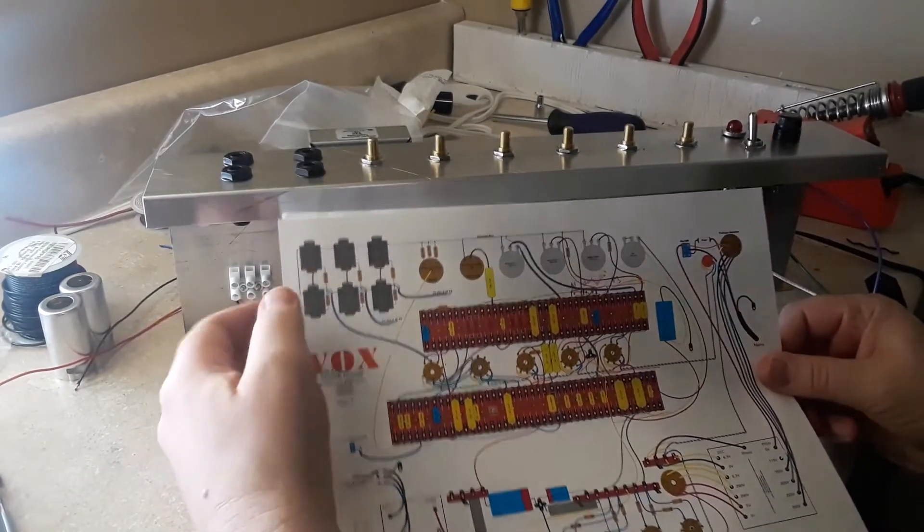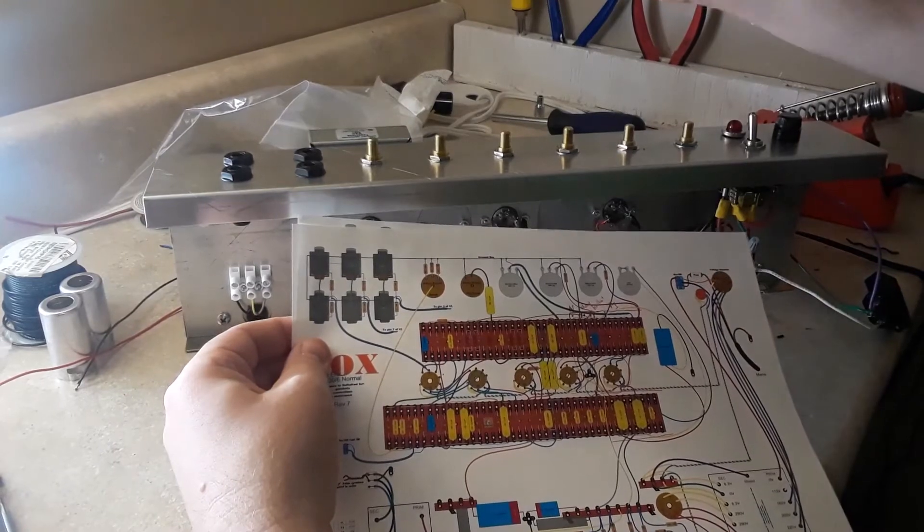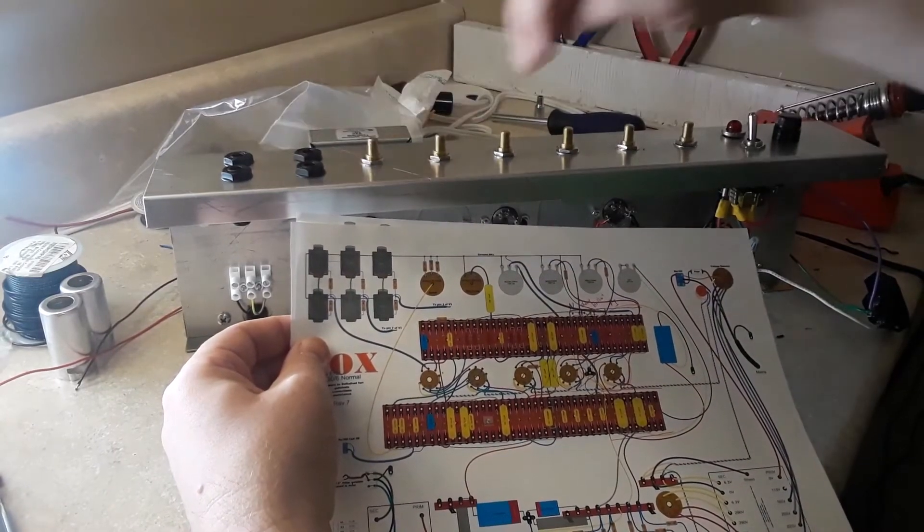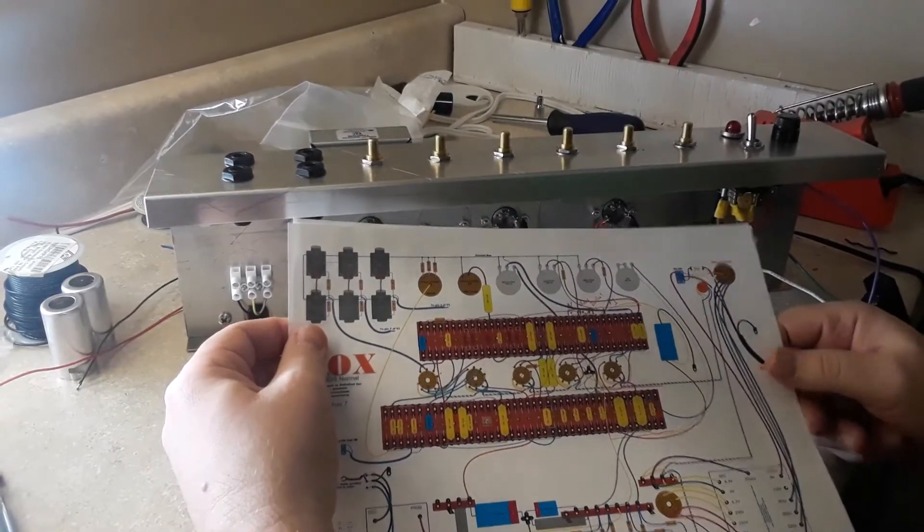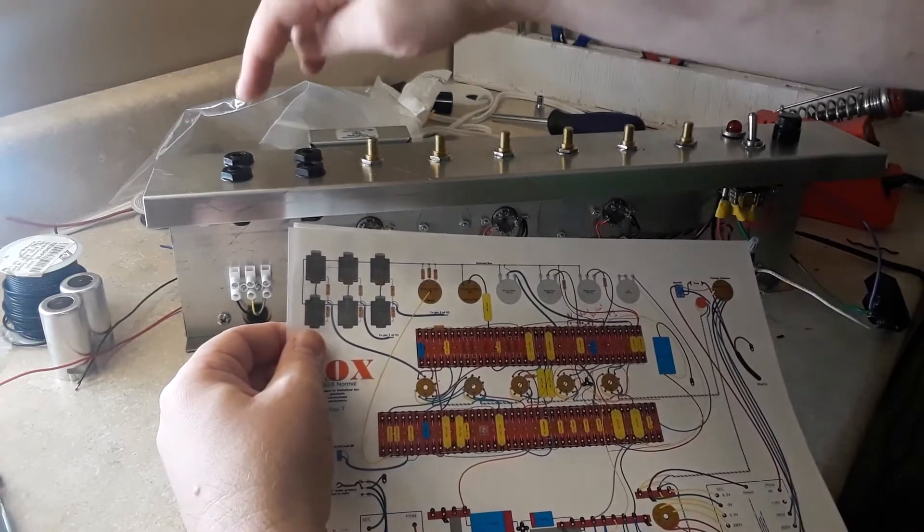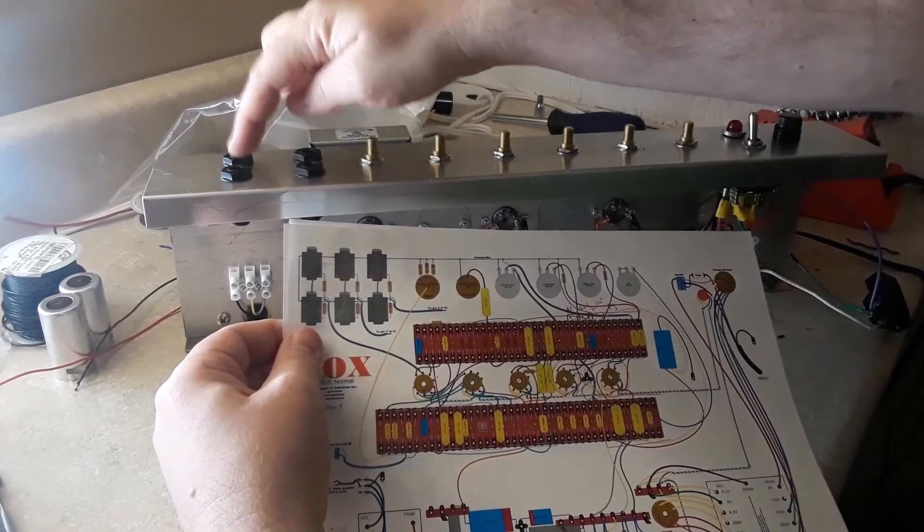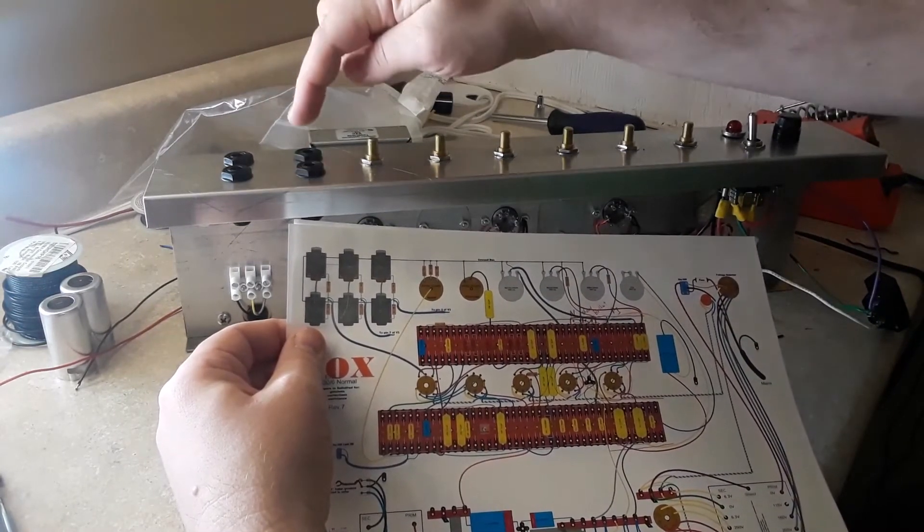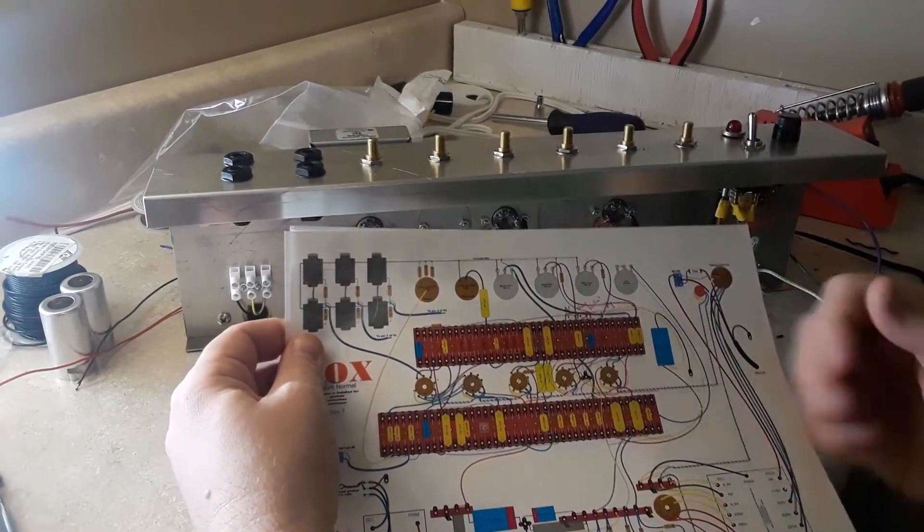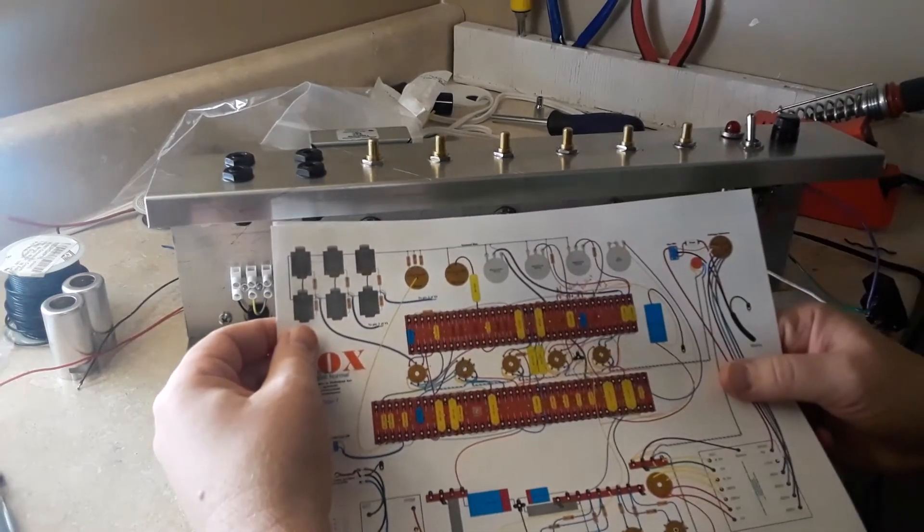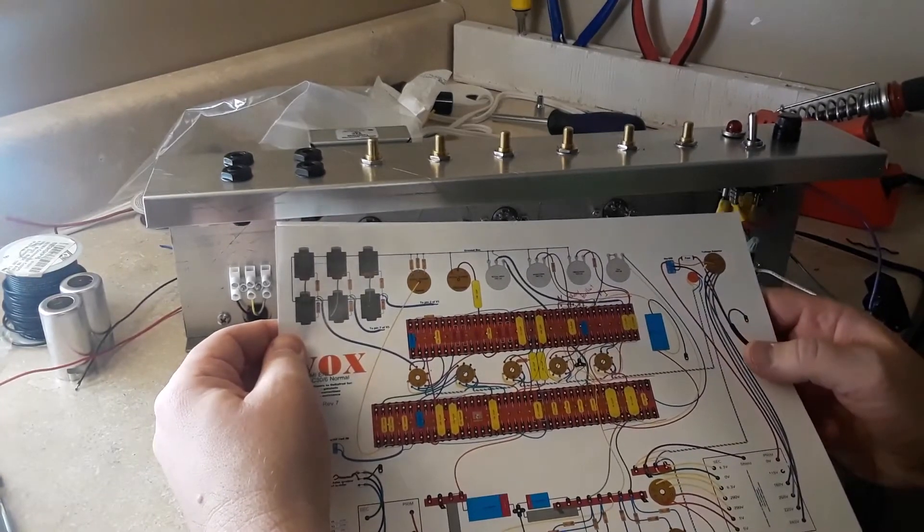And thinking about this, what I want to do is to wire my AC15 in the AC30 configuration where we have two channels which are grouped together in high, low and high, low. And since I'll be making my own faceplate for this, I will be labeling those as such.